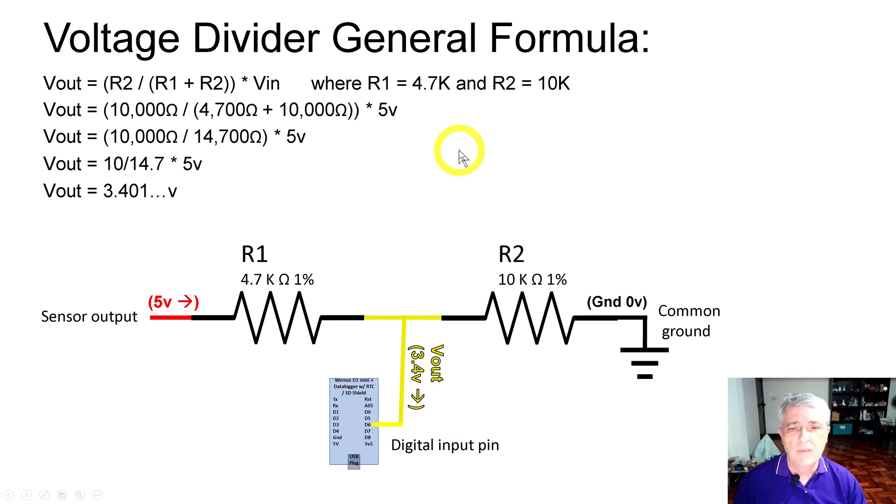Let's try it with another value. This is the one I'm using for the distance detector. The values are 4.7K and 10K for R2. We have 10K for R2, 4.7 for R1, 10K again for R2, and 5 volts for our input. We end up with 10K divided by 14.7K times 5.